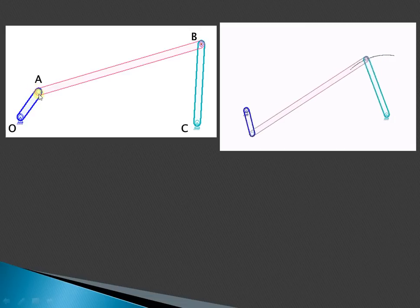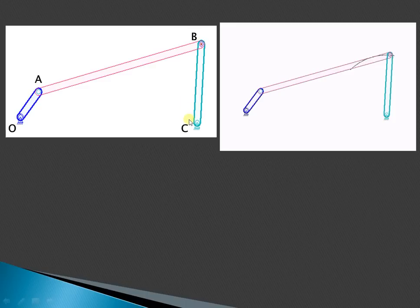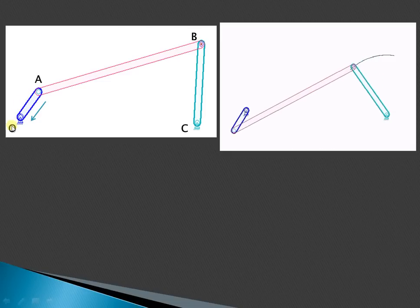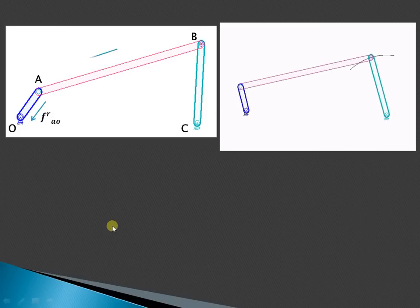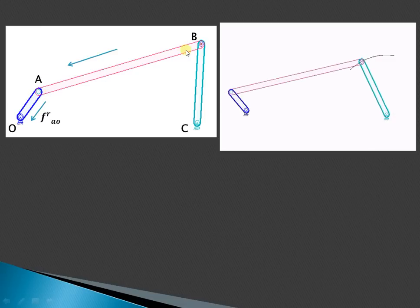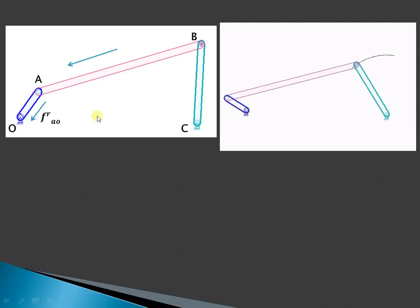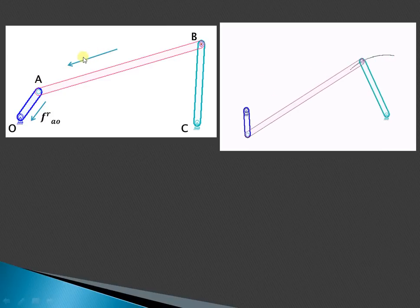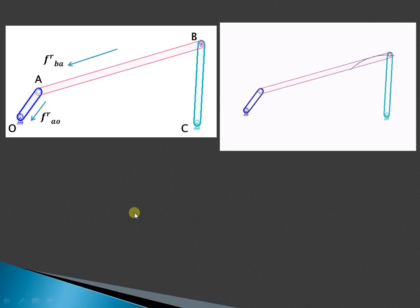OA is the crank, AB is the intermediate or coupler link, and BC is the output link. The radial or centripetal acceleration of A with respect to O — where O is the fixed point — is directed towards the center, that is O. Since neither A nor B is fixed, we can select the acceleration of either A with respect to B or B with respect to A. Assuming A is the center, the radial acceleration of B with respect to A is directed towards A. This is F_r_BA.